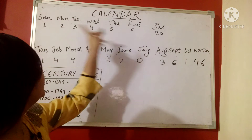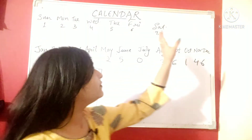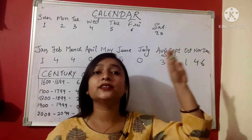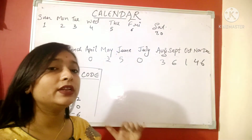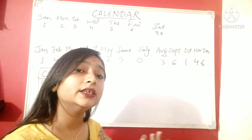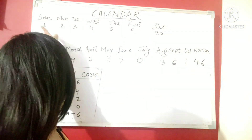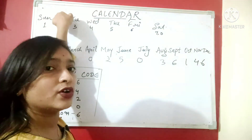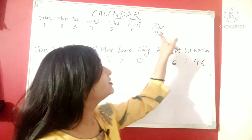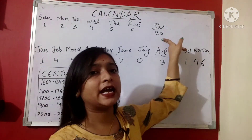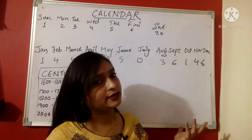In the calendar, the days Sunday, Monday, Tuesday, Wednesday, Thursday, Friday, Saturday are assigned codes. The codes are: 1 for Sunday, 2 for Monday, 3 for Tuesday, 4 for Wednesday, 5 for Thursday, 6 for Friday, and 7 — or 0 — for Saturday.